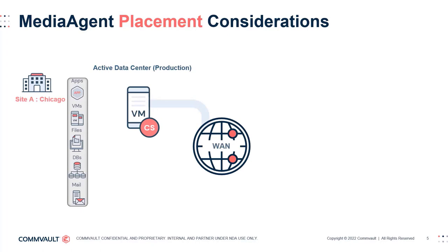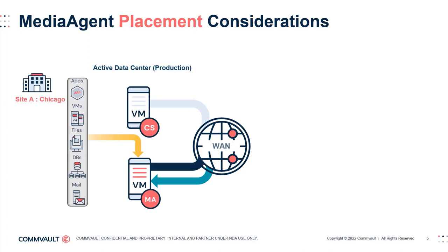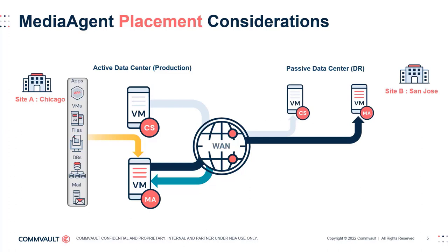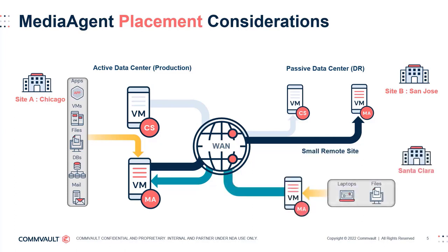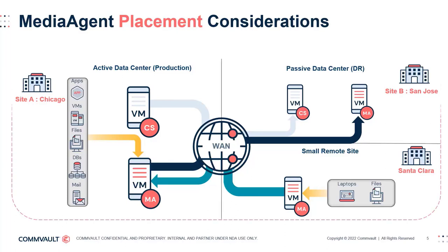In this example, our customer would require at least one media agent in their active production data center in Chicago for local backup copies. There would be another in the DR site in San Jose, where a DR CommServe stands by alongside an always-on media agent to receive an additional copy of data. Finally, the small remote site in Santa Clara also requires a local copy of data, so at least one media agent is placed there too, passing data along to the active data center for redundancy.